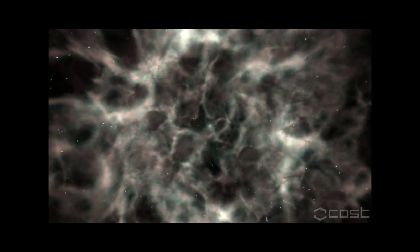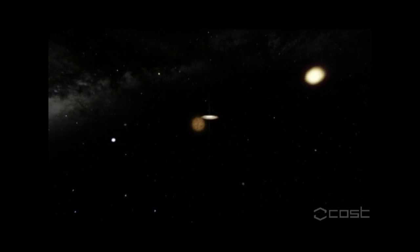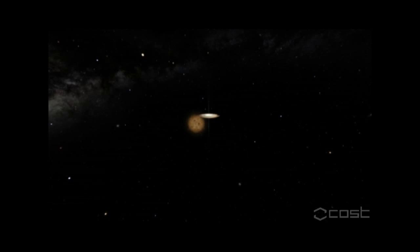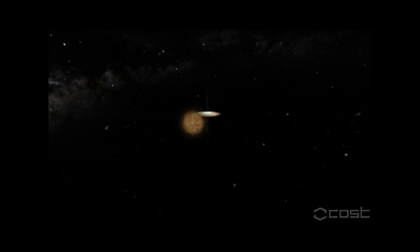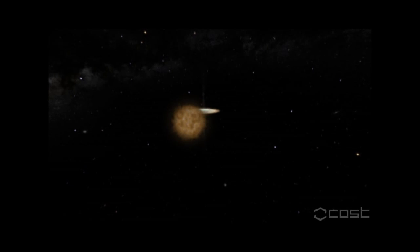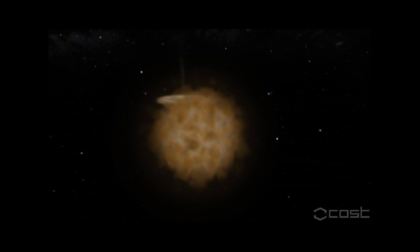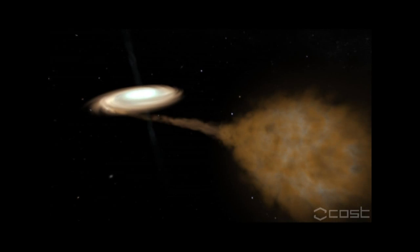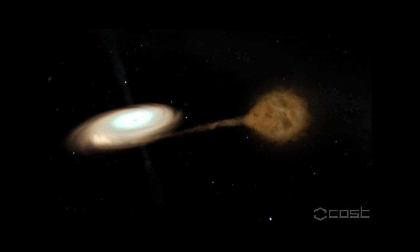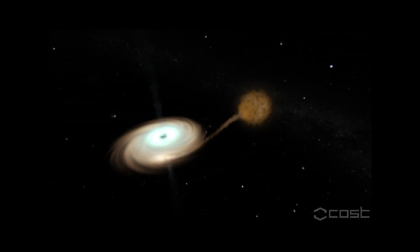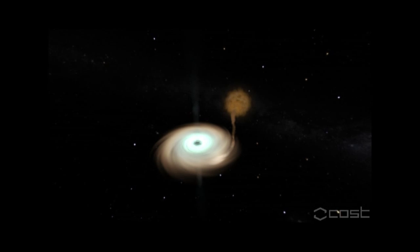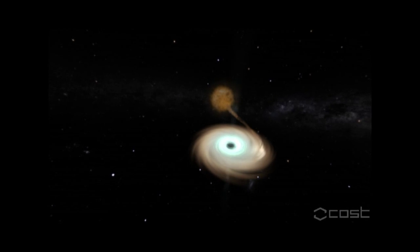The black holes that supernovae leave behind can best be observed when they occur in close binary systems. As soon as the secondary star evolves to a giant, it may be large enough to transfer mass to the black hole, leading to the formation of an accretion disk and characteristic brightness variations in X-rays with ejections of relativistic radio jets.